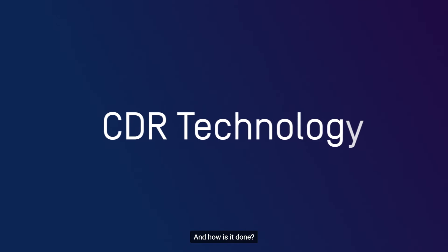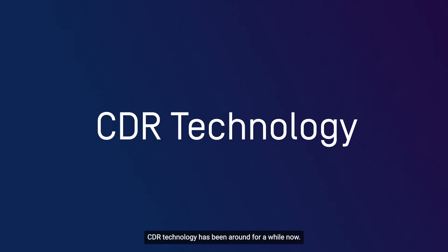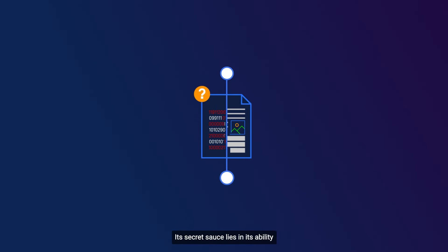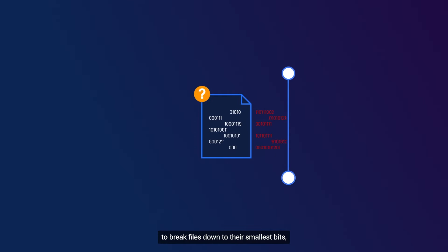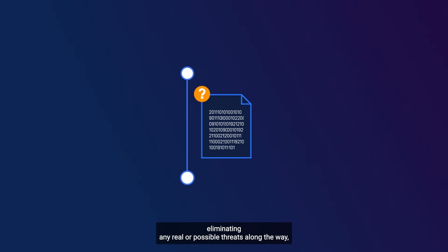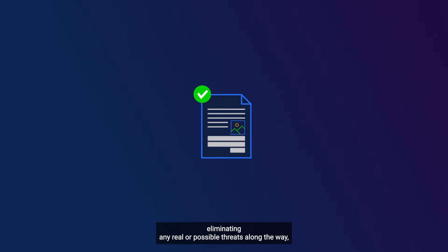And how is it done? CDR technology has been around for a while now. Its secret sauce lies in its ability to break files down to their smallest bits, eliminating any real or possible threats along the way, and then reassembling them to a known safe and functional state.